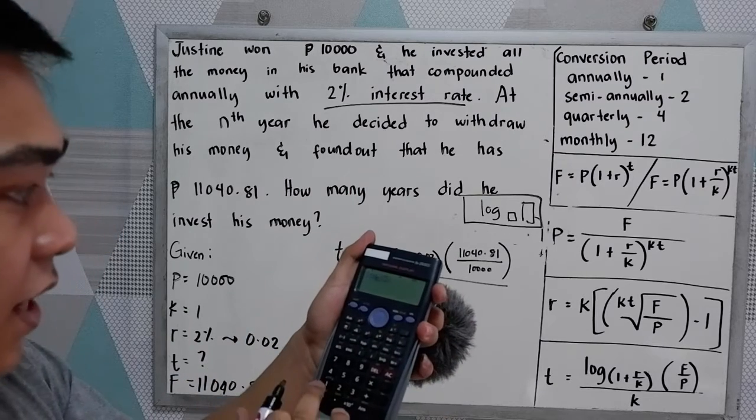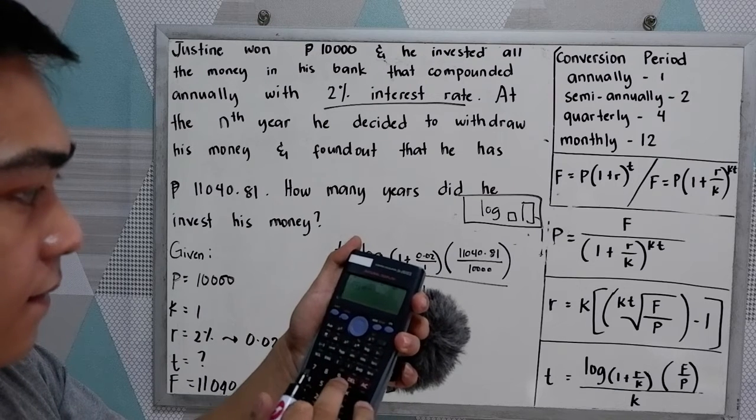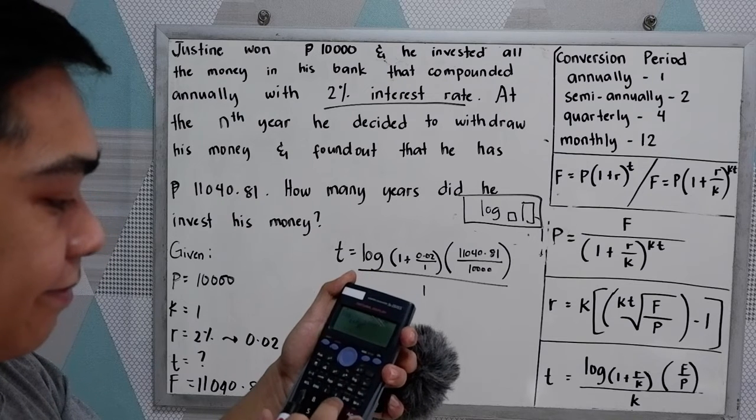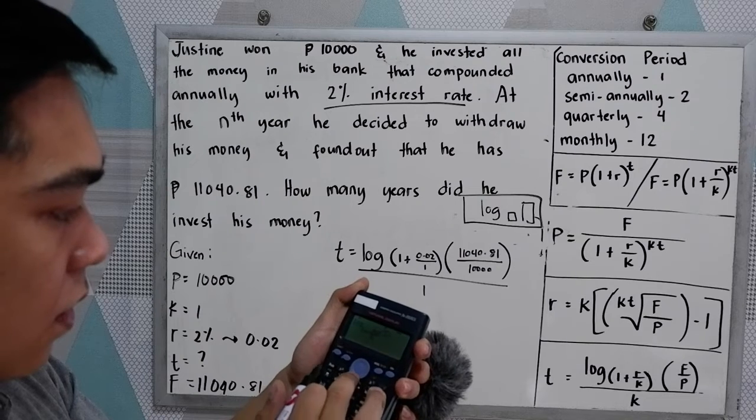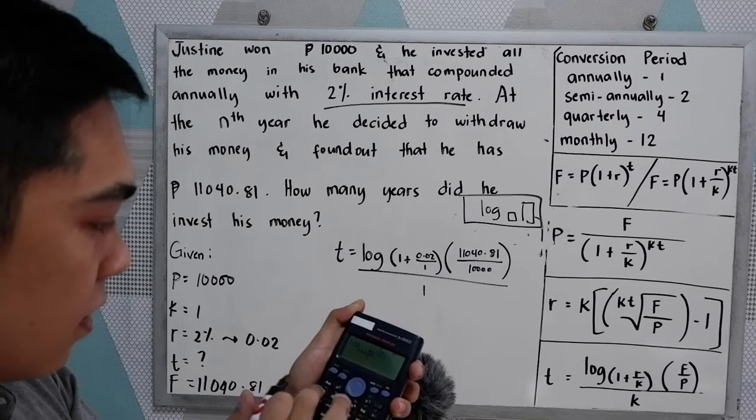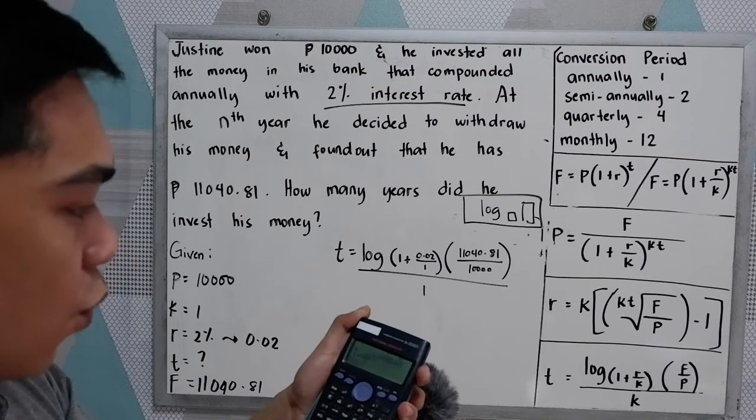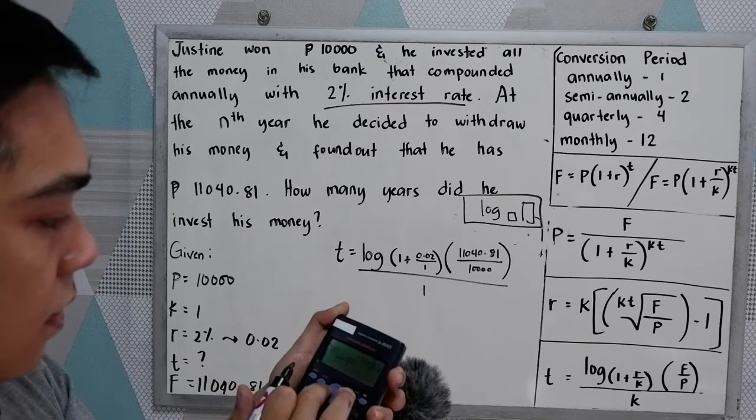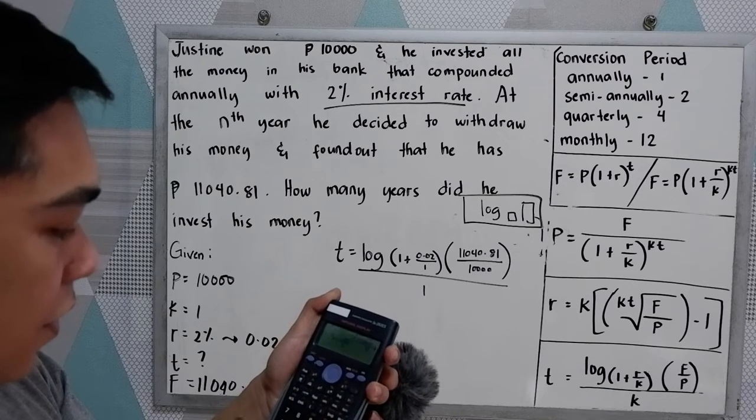Then insert the given: 1 plus 0.02 over 1, and 11,040.81 all over 10,000.